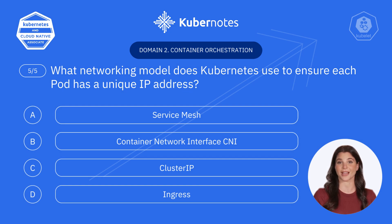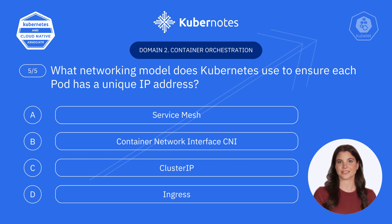Finally, question five: What networking model does Kubernetes use to ensure each pod has a unique IP address? A. Service mesh. B. Container Network Interface (CNI). C. Cluster IP. D. Ingress. You're absolutely right — it's B, Container Network Interface. CNI plugins ensure that every pod has a unique IP, enabling seamless communication within the cluster.